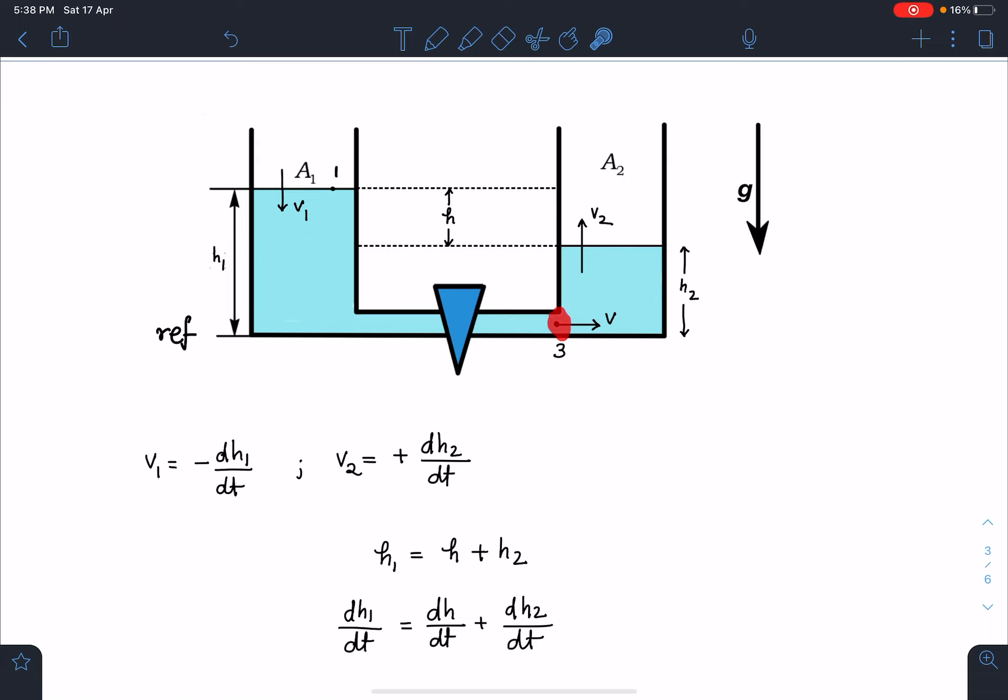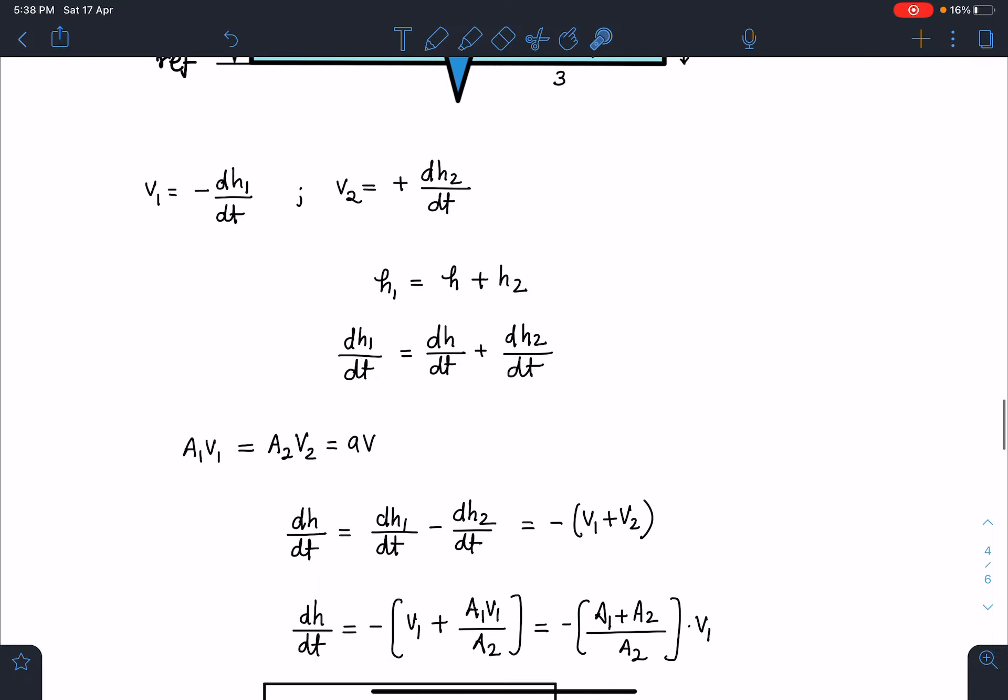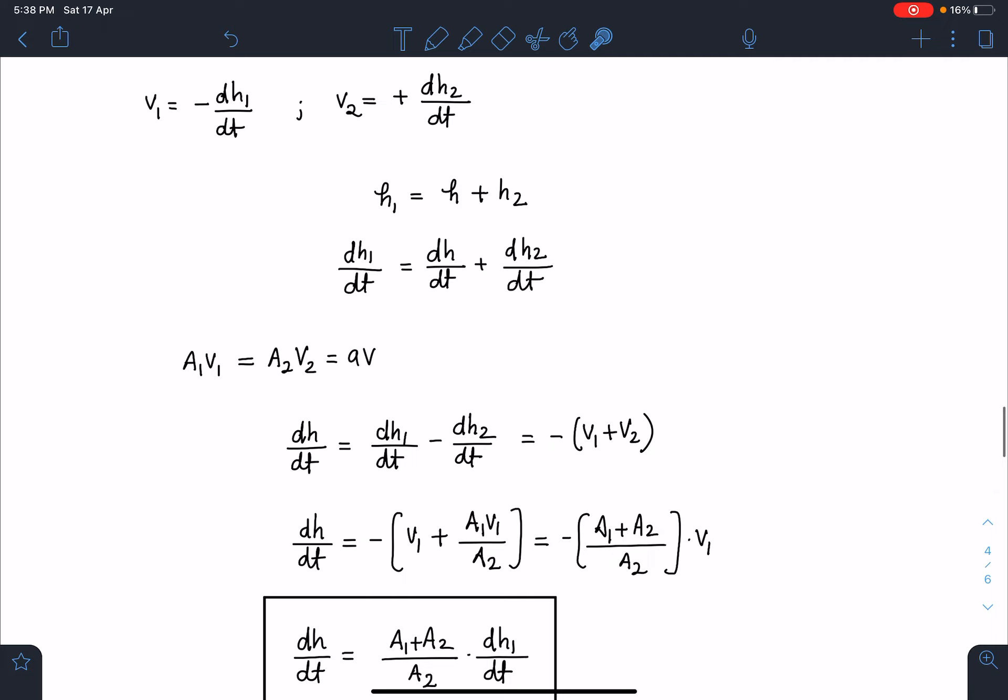I am ignoring the possibility of turbulent flow which normally occurs in real situations, so I am assuming here flow remains streamlined. I can write this v1 as minus dh1/dt because h1 is decreasing. Similarly this h2 is increasing, I can write this part as dh2/dt. Similarly I can write this height h1 is h + h2, so if I differentiate this I am going to get dh1/dt which is going to be dh/dt and that is also going to be dh2/dt.